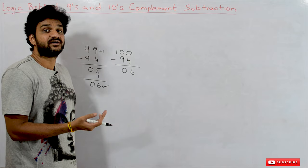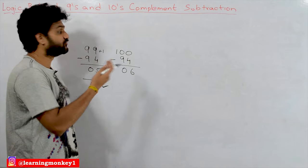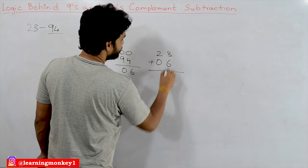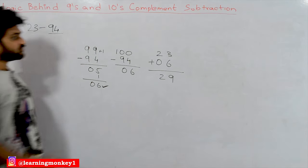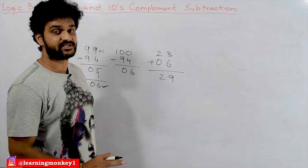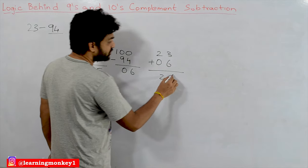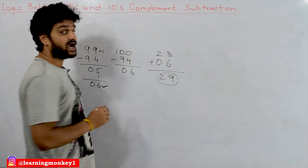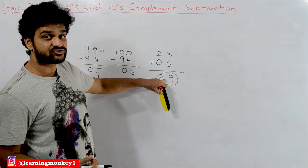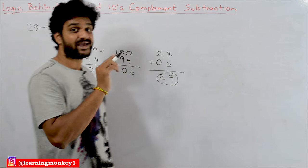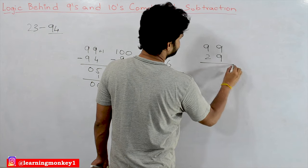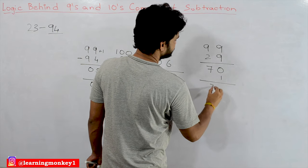Once the 10s complement of the subtrahend is obtained, we add it to the minuend. The minuend is 23, so we compute 23 plus 6, which equals 29. The next step: since there is no carry, in 10s complement subtraction when there is no carry, we find the 10s complement of the result and add a negative symbol to it. So we need the 10s complement of 29.